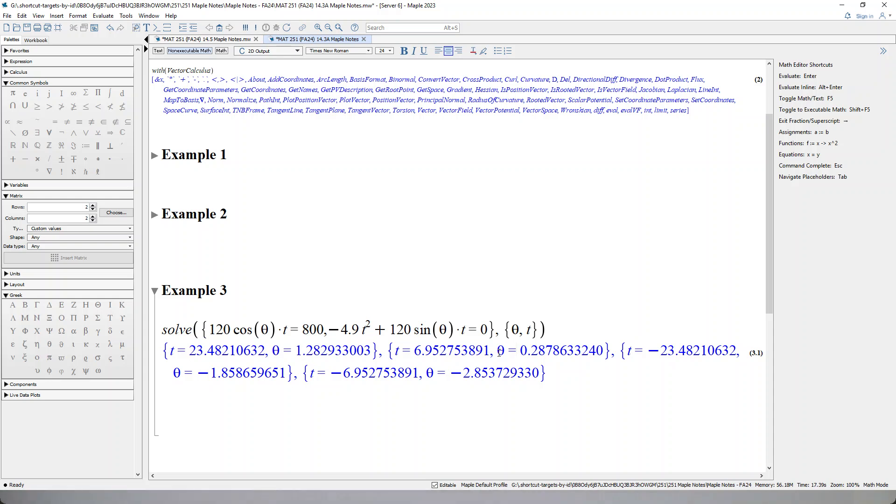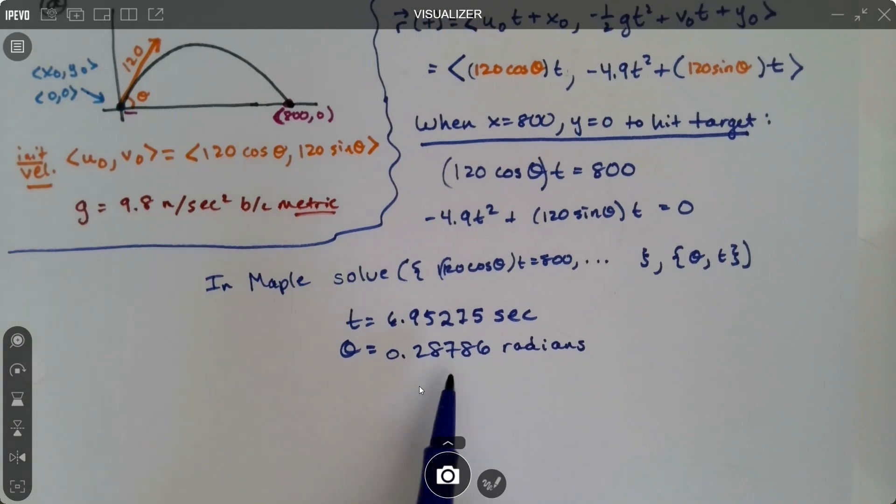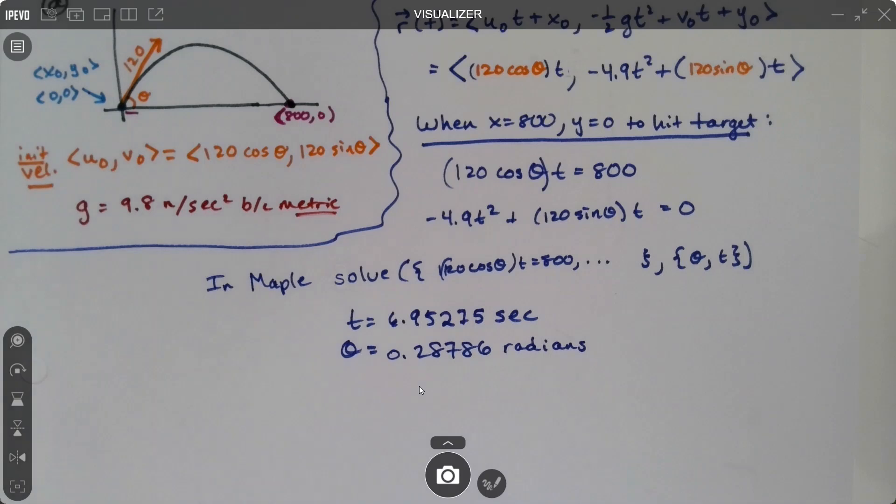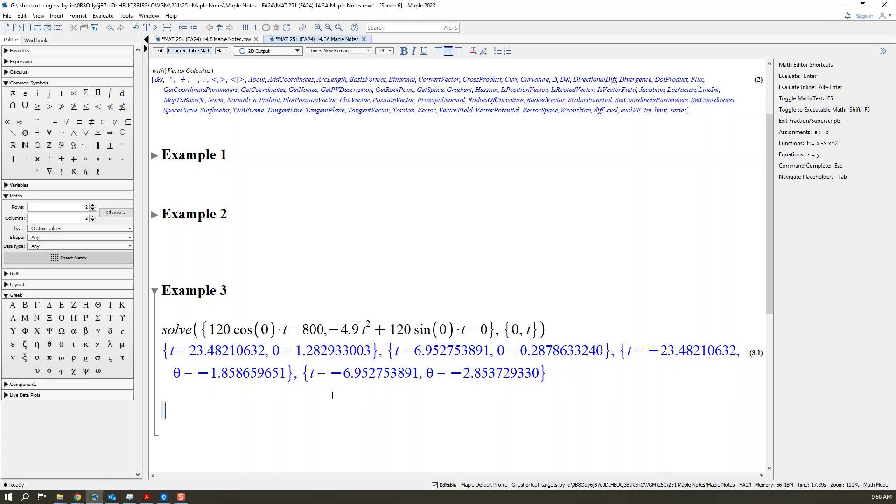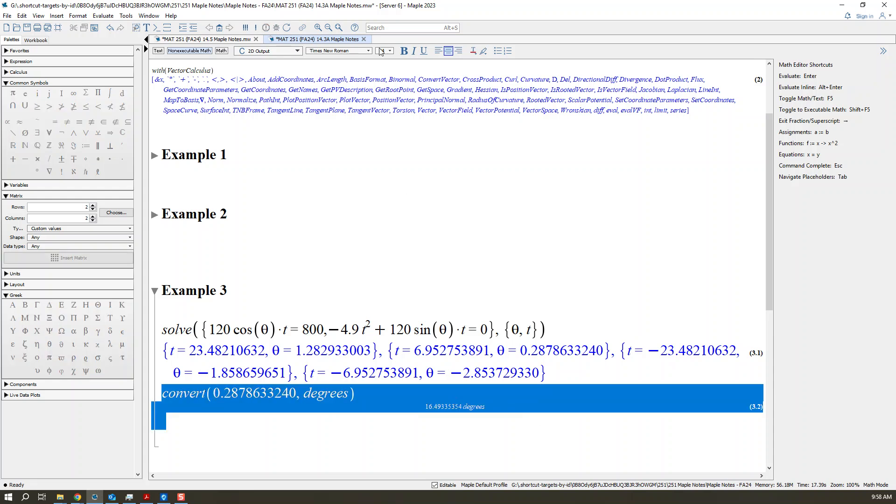So we've got solutions. I'm going to lowercase my s for my solve here. So my solutions are t is 6.95275 seconds. And theta is 0.28786. Now keep in mind that's radians. It can't help itself. It's radians. So we want to convert that to degrees because that's the way we think about, or the way we deal with angles for trajectories. So I would convert that answer. So I can even copy and paste it. So it's this answer, 0.287 and change two degrees. And it's 16.49 degrees or 16.493.